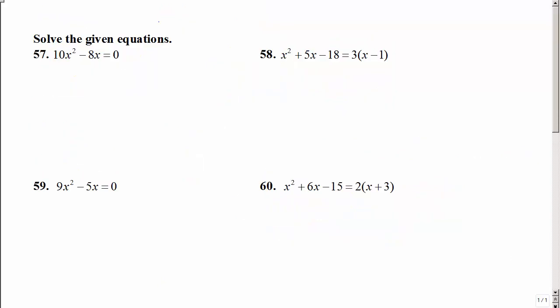These are quadratic equations that we're going to be solving by the factoring method. You need to set it equal to zero. We need to factor, and we need to set each factor equal to zero in order to solve. So number 57 already has that very important zero. So we're just going to factor, and we're going to look for that GCF of 2x. Then you set each factor equal to zero, and solve that resulting linear equation. So dividing by 2, here we're going to add 4, and divide by 5.